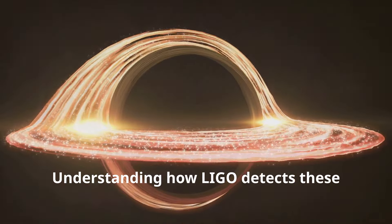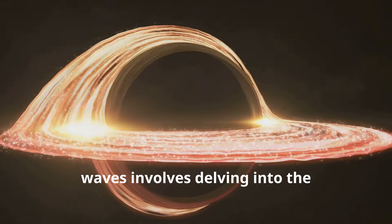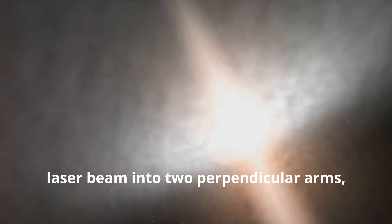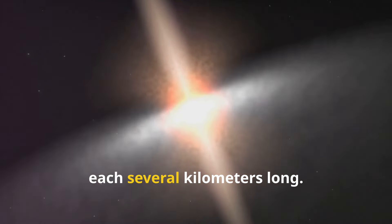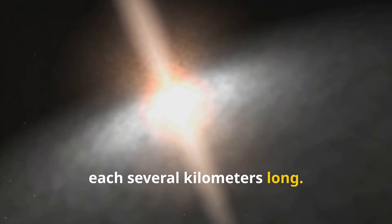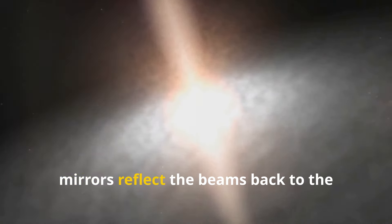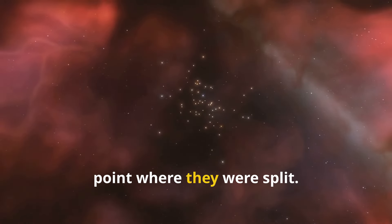Understanding how LIGO detects these waves involves delving into the intricacies of laser interferometry. An interferometer works by splitting a laser beam into two perpendicular arms, each several kilometers long. At the end of each arm, mirrors reflect the beams back to the point where they were split.